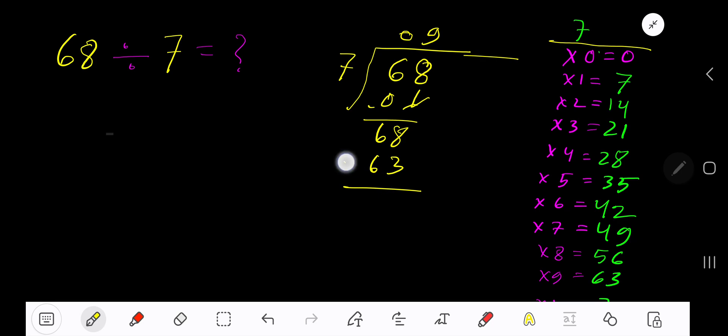So our answer is 9 remainder 5. If you want to write your answer in decimal form, then take your decimal, add number of zeros.